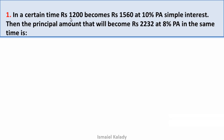In a certain time, Rs. 1200 becomes Rs. 1560 at 10% per annum simple interest. Then the principal amount that will become Rs. 2232 at 8% per annum in the same time is how much. This is a simple interest question from the previous year's paper. The simple interest topic classes are already available on our YouTube channel.